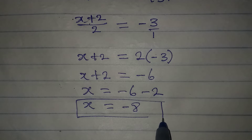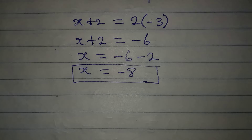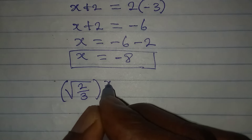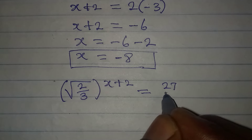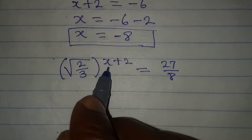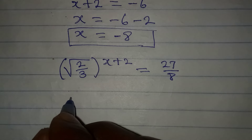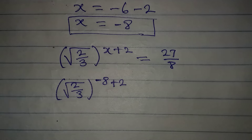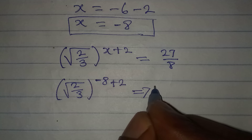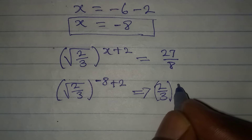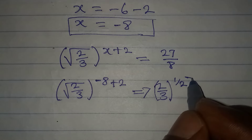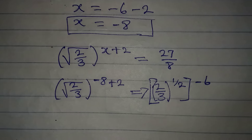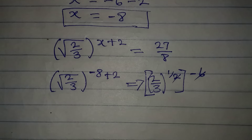Now let's check whether we are right. The original equation is square root of 2 over 3 to the power of x plus 2, equal to 27 over 8. Substituting x equals negative 8, we get 2 over 3 to the power of 1 over 2, then to the power of negative 8 plus 2, which gives negative 6. Multiplying the exponents: one half times negative 6 gives negative 3.